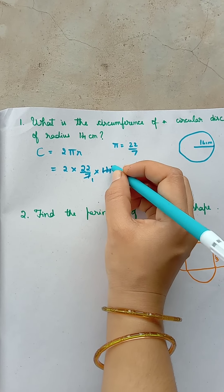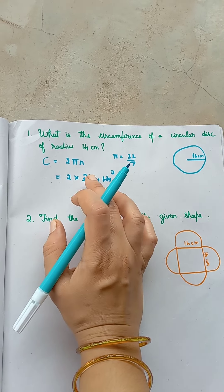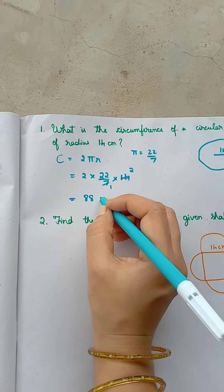So 7 1s are 7, 7 2s are 14. 2 into 2 is 4. 4 into 22 is 88 cm.